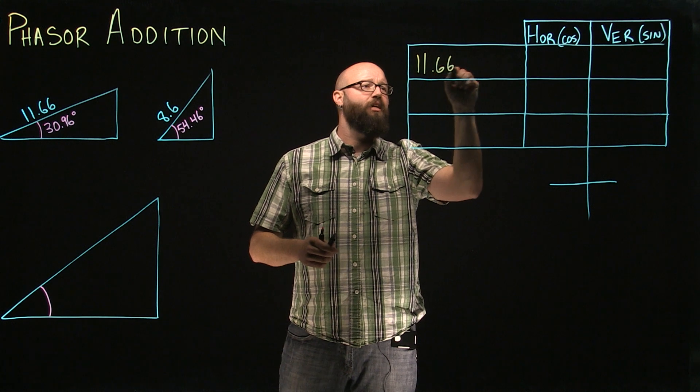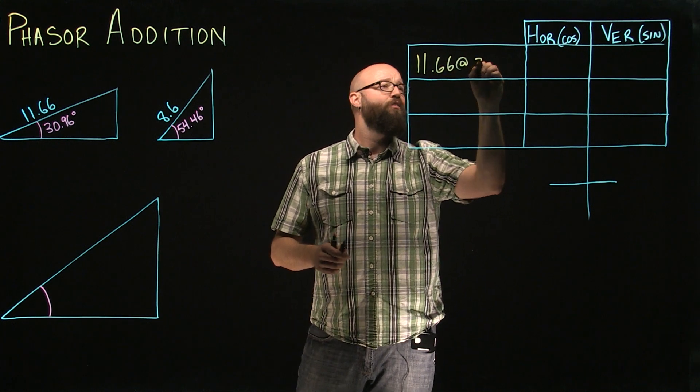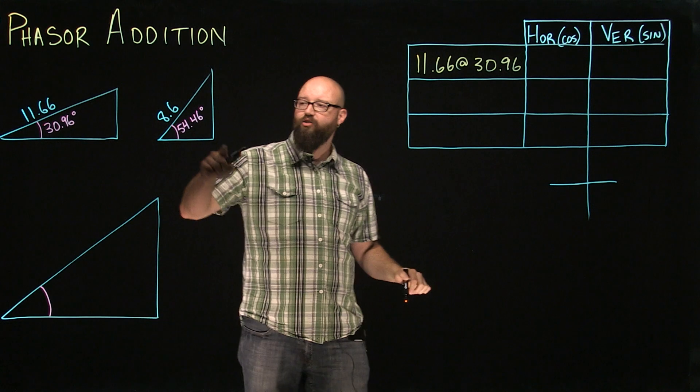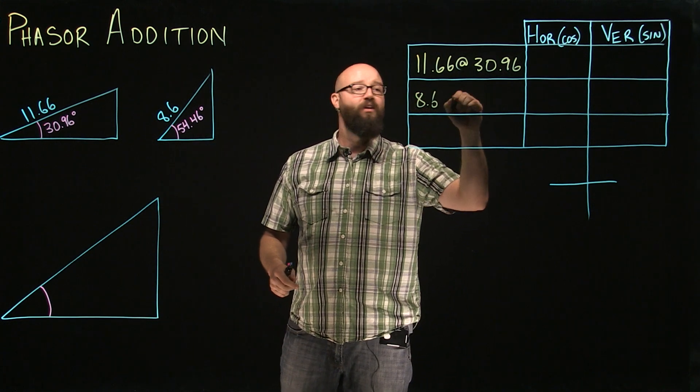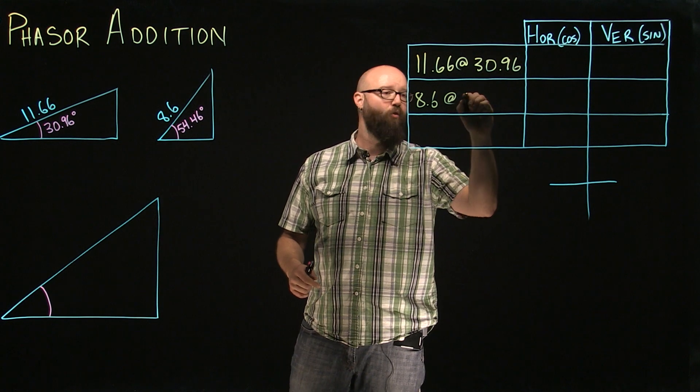11.66 at an angle of 30.96. We have our second triangle, 8.6 is our hypotenuse, at an angle of 54.46.